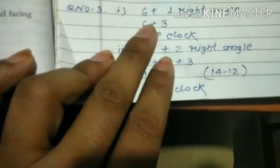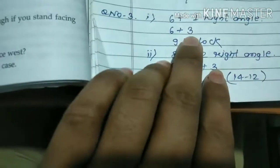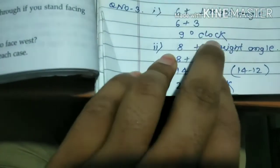12 points means one complete revolution. Your solution is here: starts at 6, one right angle means 3 points, so the answer is 9 o'clock.